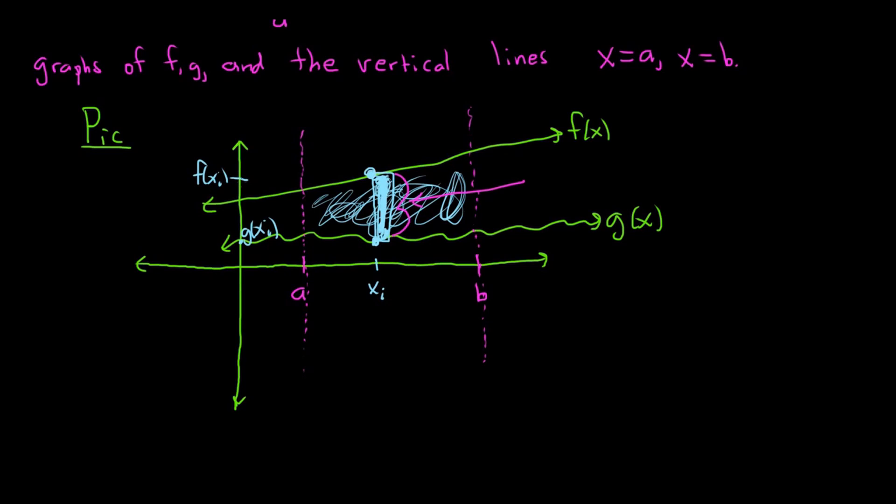So this distance here, it's going to be top minus bottom. It would be f(xi) minus g(xi). So this big distance here is f(xi). This little distance here is g(xi). So top minus bottom. So f(xi) minus g(xi). This is the height of the rectangle. Let's call it the length. It is the height. So it's top minus bottom.